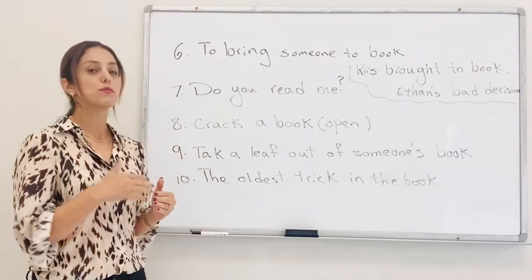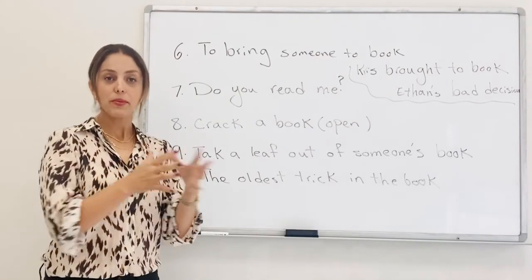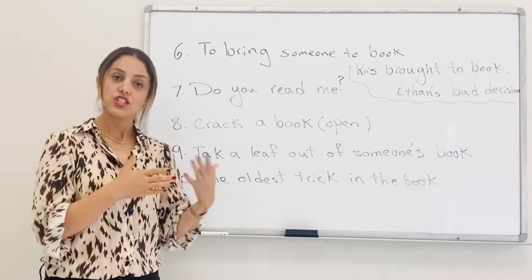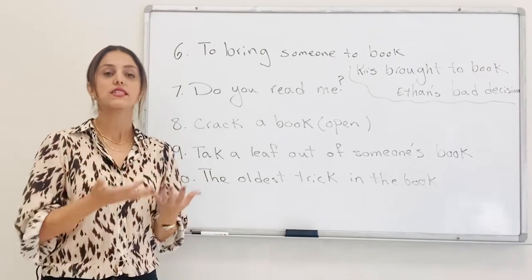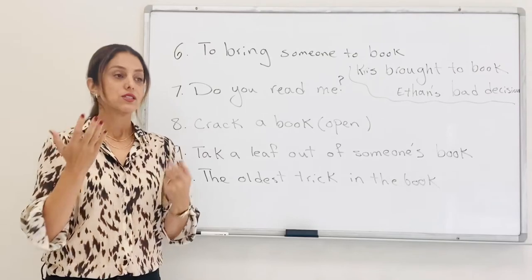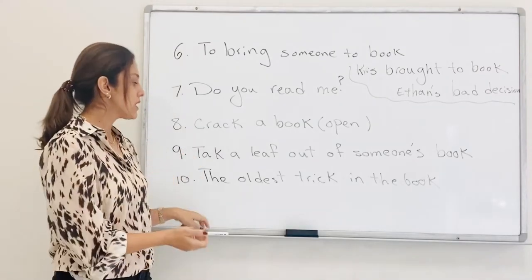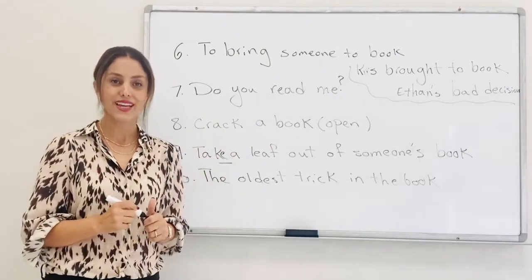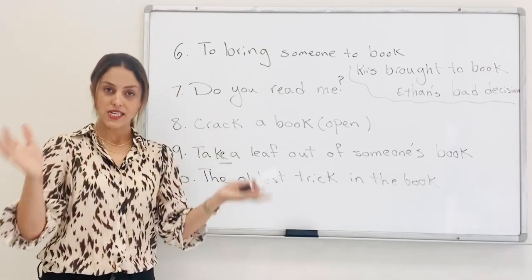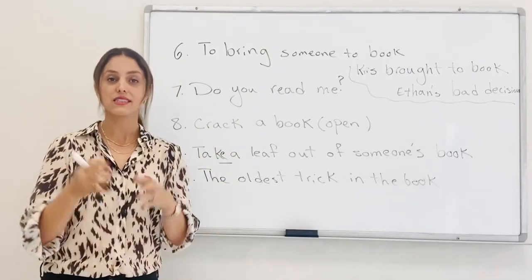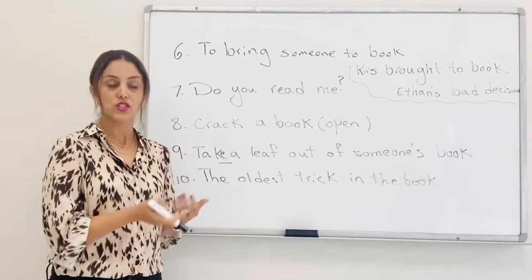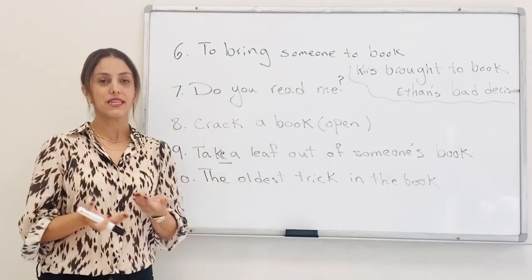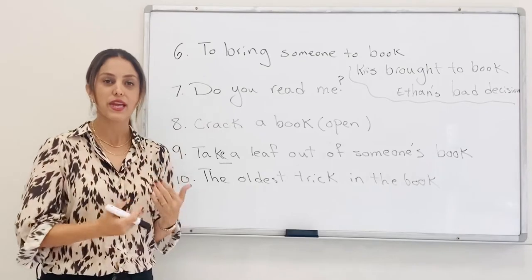Take a leaf out of someone's book. It means copying someone. Copying what someone did because she or he was really successful at what she was doing or what he was doing. You can say, take a leaf out of someone's book. Copying someone because that person is really successful at what he was doing, what she was doing. So if you take a leaf out of his book or her book, so probably you'll be successful too. So you're copying what she was doing.